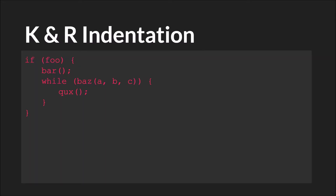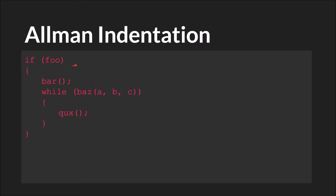First, let's talk about indentation. I'm going to go through two main styles — there are many more, and at the end of the slides there'll be a link to the Wikipedia page that covers a bunch of them. The first one, and the one I use throughout this tutorial, is KNR. In KNR, you put the first bracket on the first line, then you indent and write your code. If you have more code, you put the bracket on that line, indent again. Then you put the closing bracket at the same level of indentation as the code block that it forms.